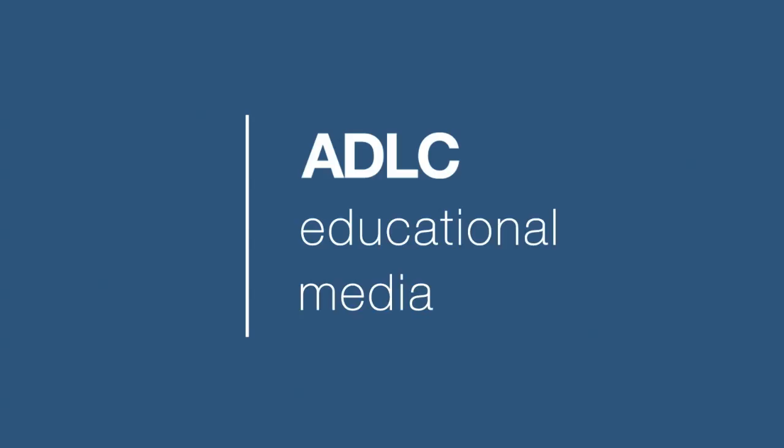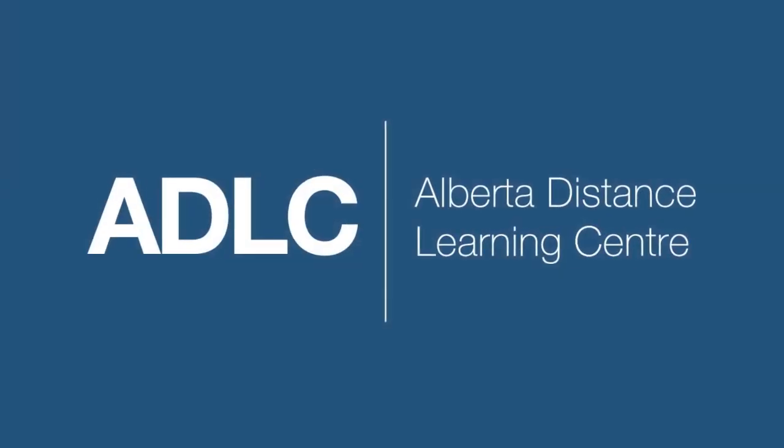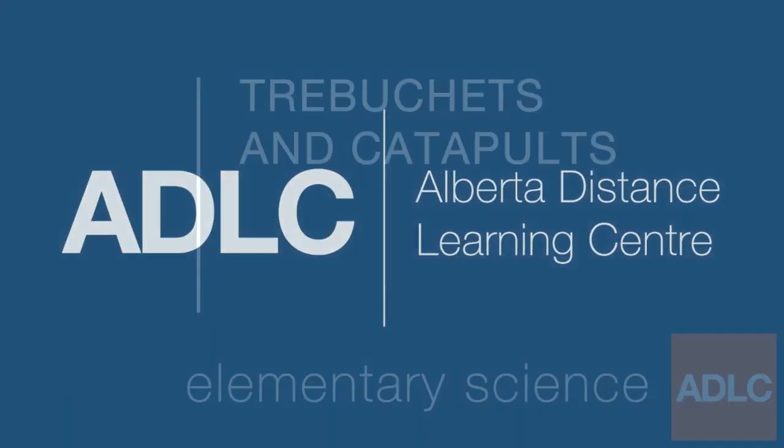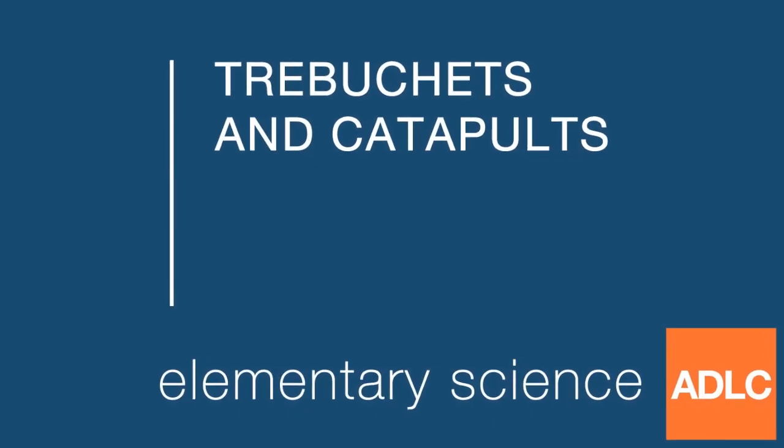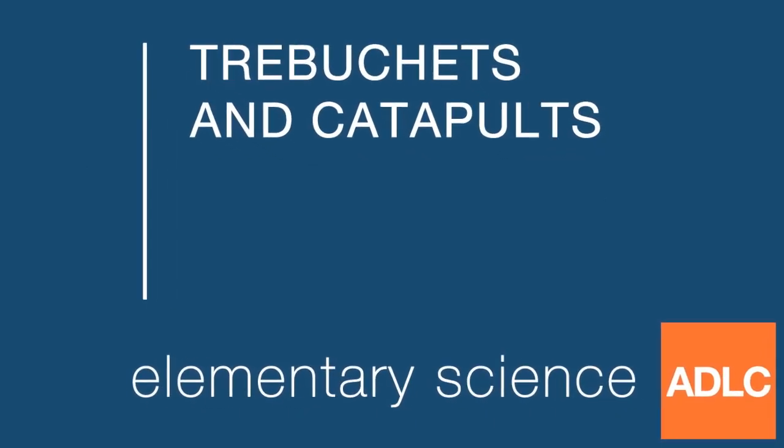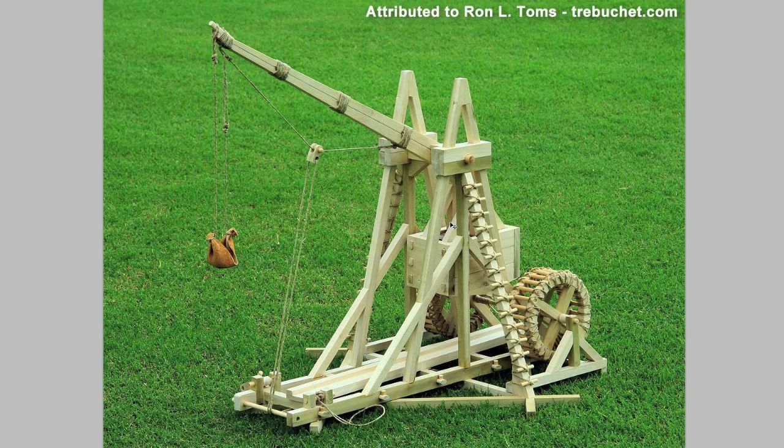Hello and welcome to another ADLC digital lesson. Today our lesson is on trebuchets and catapults. The trebuchet was a beautiful piece of medieval engineering that was made to lay siege to castles. That's fancy talk for it could throw rocks really hard, really fast, and smash down the walls of castles.